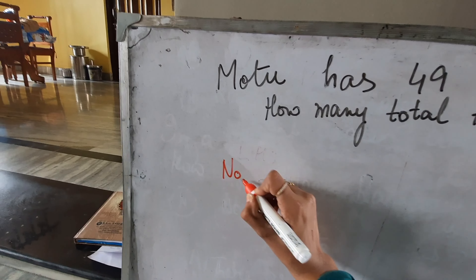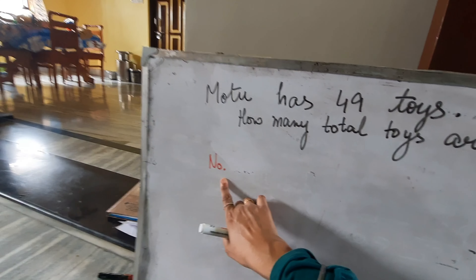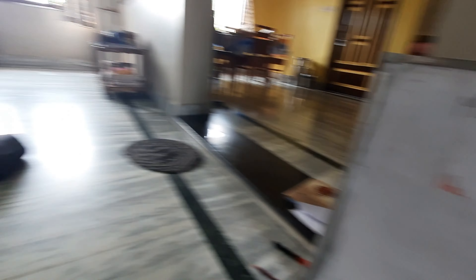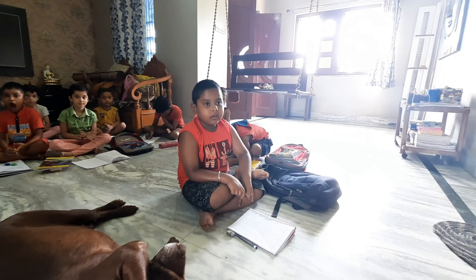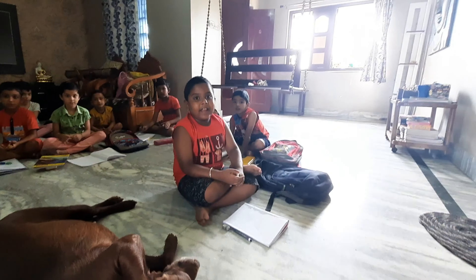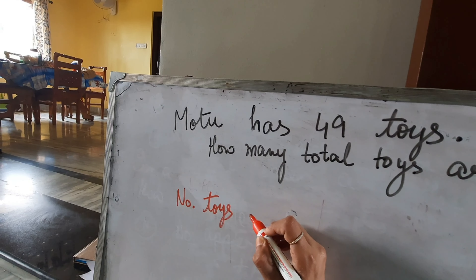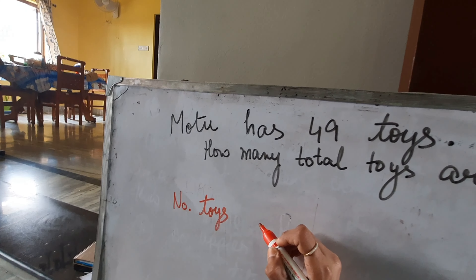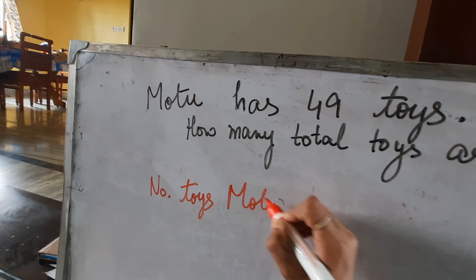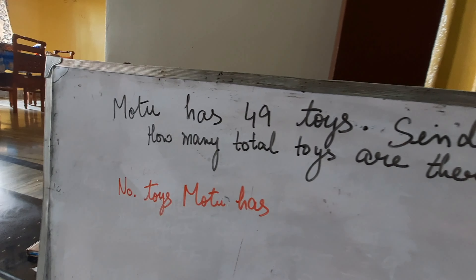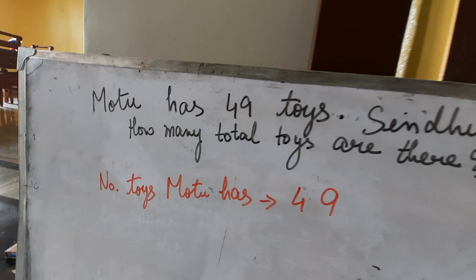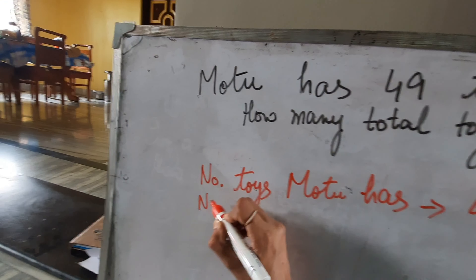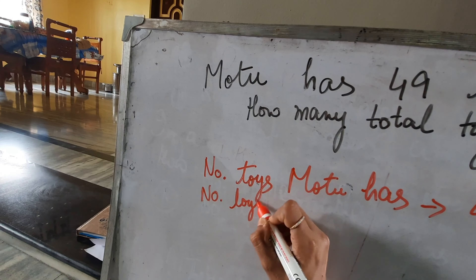So how will you write first? Number of — we write in short like this: N, O and dot. Number of what? Motu has 49 toys. So number of toys — number of toys. Then what will I write? Number of toys. Motu has. How many toys does Motu have? 49. You will write here 49. Now in the next column again you will write: number of toys.